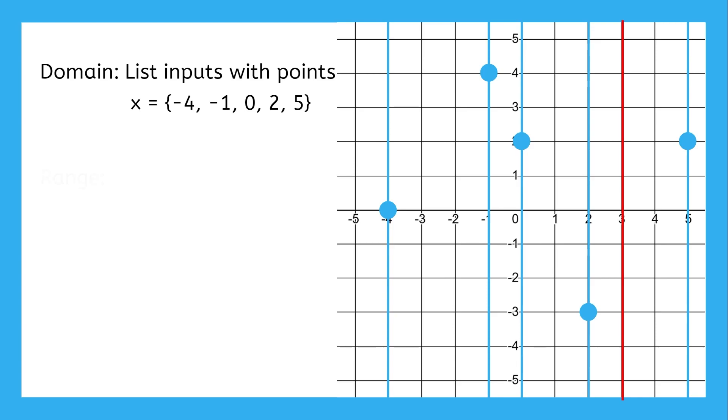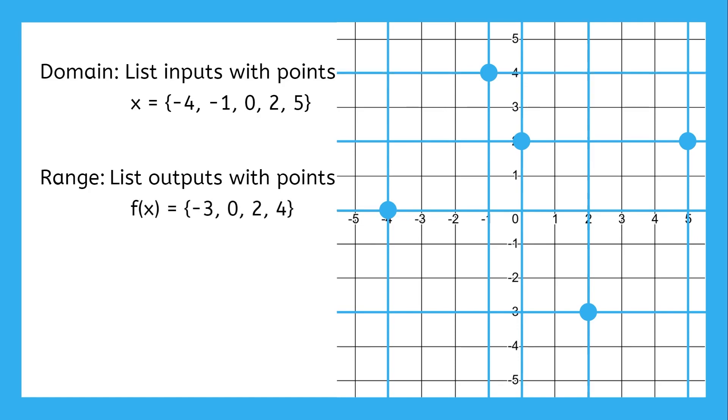Range is very similar, but focused on the output instead of the input. So for the range, we have negative three, zero, two, and four. Each of those outputs has a connected input. For instance, an input of five gives an output of two, so two is in the function's range.